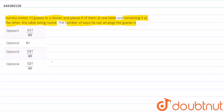we need to find the number of ways that he can arrange the guests. Now let us find first the number of ways in which 13 guests